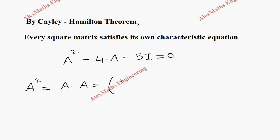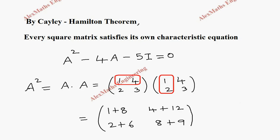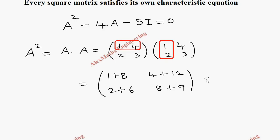A is [1, 4; 2, 3], and we multiply it by itself. Taking the first row and multiplying with the corresponding elements of the first column: 1 times 1 plus 4 times 2 gives 9. First row, second column: 1 times 4 plus 4 times 3 gives 16. Second row, first column: 2 plus 6 gives 8. Second row, second column: 8 plus 9 gives 17. So A squared is [9, 16; 8, 17].